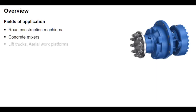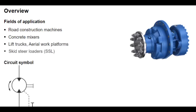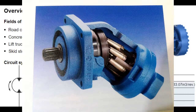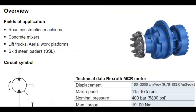The circuit symbol for an MCR motor is the symbol for a hydraulic motor with fixed displacement, reversible direction of rotation, and drain line. MCR radial piston motors come with displacements between 160 to 3,000 cubic centimeters per revolution. They operate at a maximum speed of 115 to 875 revolutions per minute and a nominal pressure of up to 400 bar, 5,800 psi.